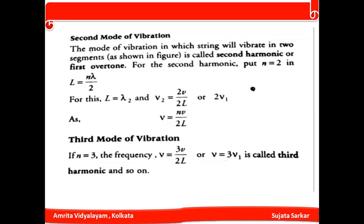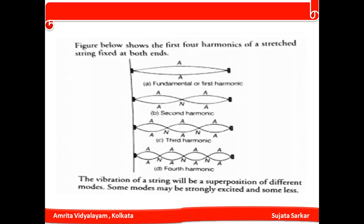In the second mode the string vibrates in two segments — the second harmonic or first overtone, n = 2. In the third mode, n = 3, called the third harmonic, and so on. The variation of the string is a superposition of different modes; some modes may be strongly excited and some less so. This concludes today's topic. Tomorrow I will start another topic for this chapter. Thank you for watching.